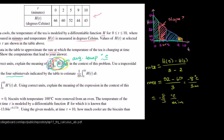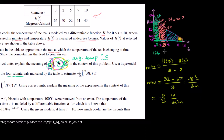The area of the first trapezoid has base 2 and average height (66+60)/2 = 63, giving area 2 × 63 = 126. The area of the second (orange) trapezoid has base 3, with heights 60 and 52 averaging to 56, giving area 3 × 56 = 168.